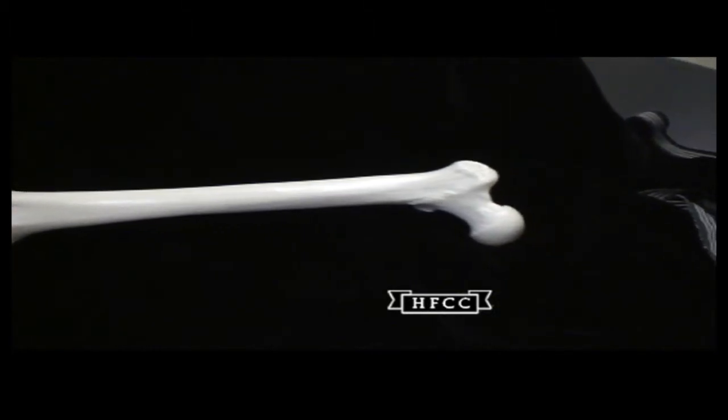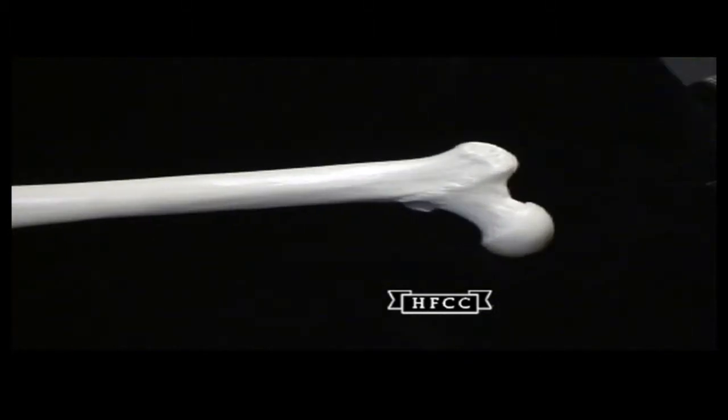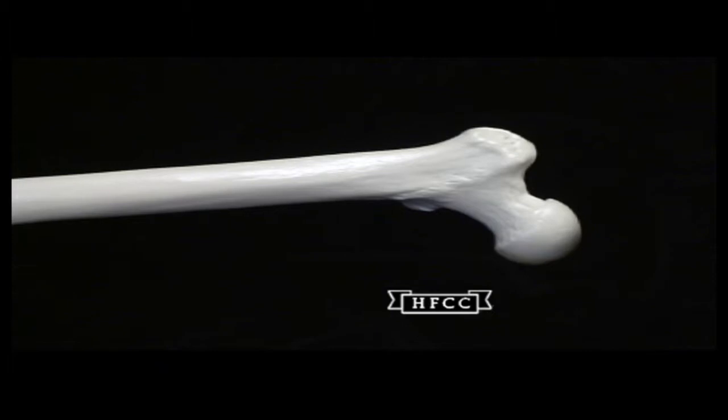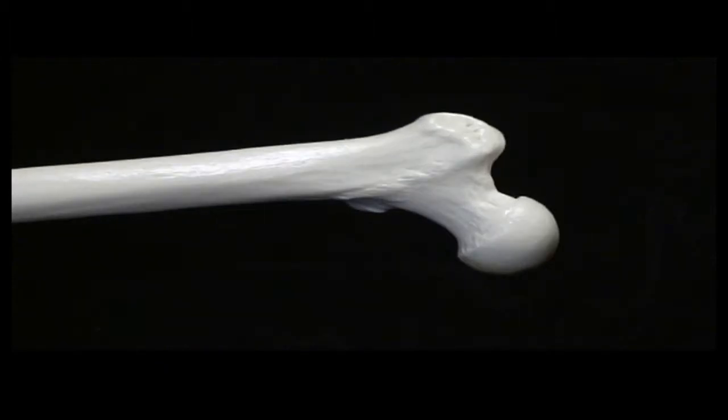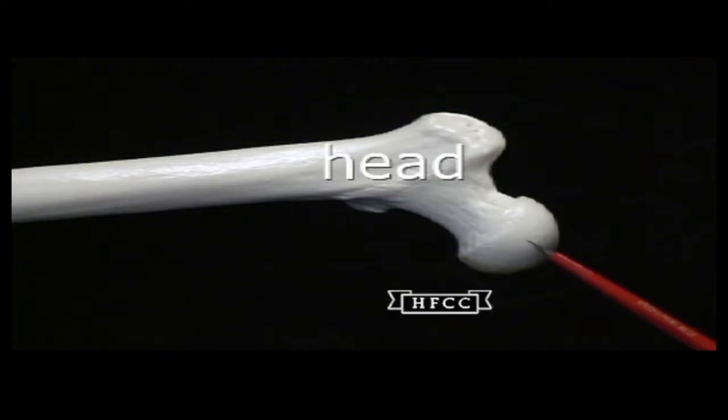This video will take a look at the right femur, the anterior and posterior views. Here's a plastic sample of a femur going to the proximal end of the anterior view. The first structure I'm going to look at here will be the smooth item called the head.